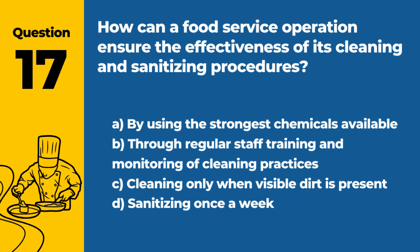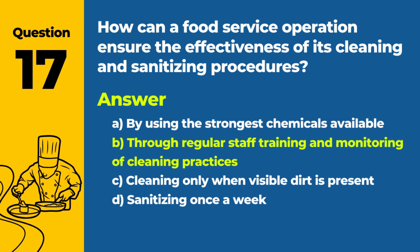Question 17: How can a food service operation ensure the effectiveness of its cleaning and sanitizing procedures? a. By using the strongest chemicals available. b. Through regular staff training and monitoring of clean practices. c. Cleaning only when visible dirt is present. d. Sanitizing once a week. Answer: b. Ensuring the effectiveness of cleaning and sanitizing procedures involves regular staff training and monitoring of the practices to maintain consistent standards.